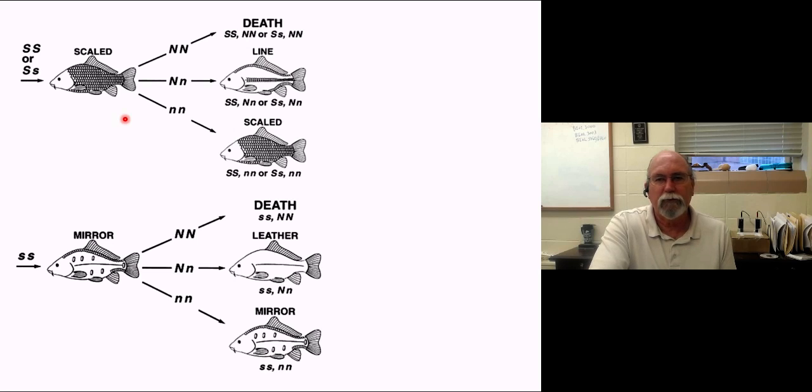The little Ss epistatically give us mirrored, which results in either mirrored like this, which has these scales scattered around the body, basically like this line but you remove the line and move them to other areas, all the way to what's called leathered. Leathered is basically scales that are pretty much absent along the body form. Either one of those little Ss combined with big N, big N is a lethal system. So that would be an epistatic lethal. We're actually going to play with one of those in our problem sets when we start next.